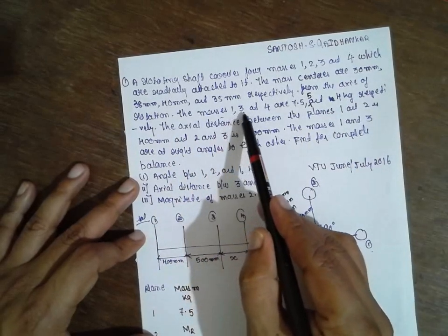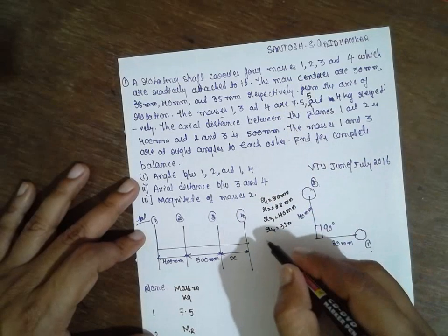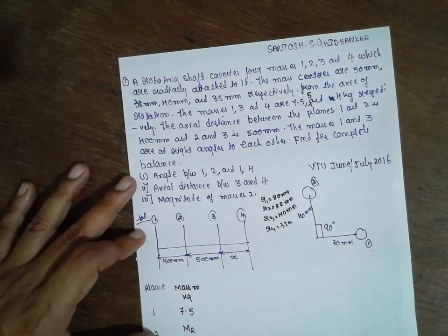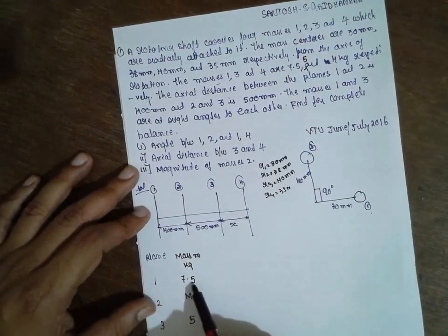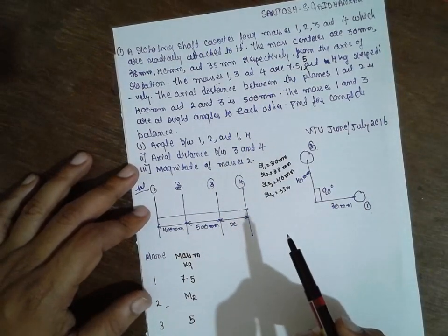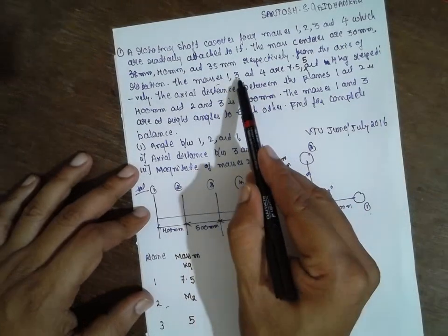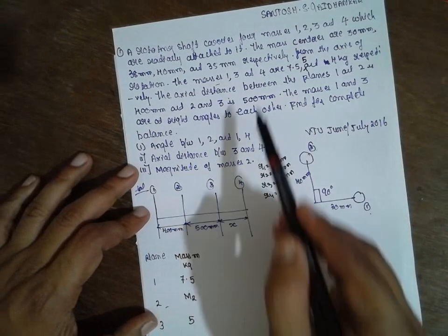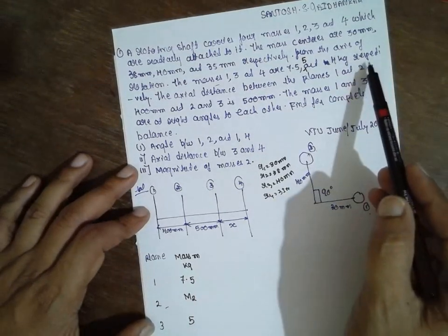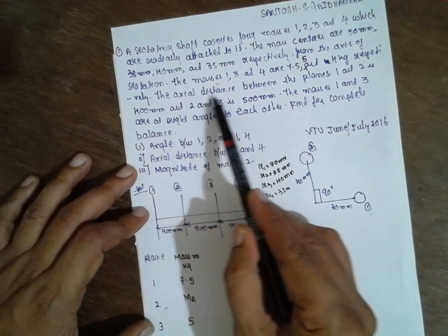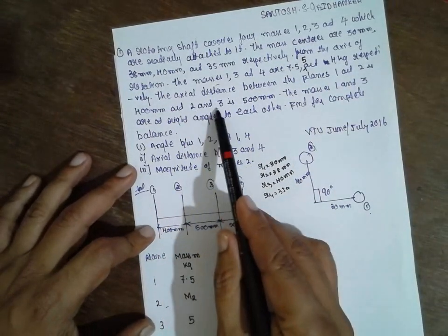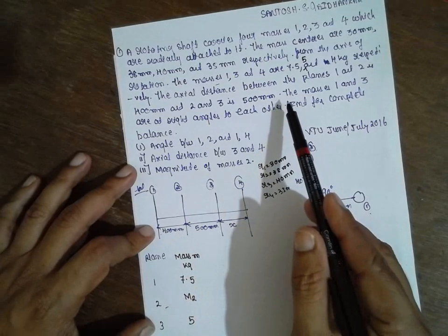The masses given are: mass one = 7.5 kg, mass two is unknown, mass three = 5 kg, and mass four = 4 kg. The axial distance between planes one and two is 400 mm, between two and three is 500 mm, and between three and four is X, which we have to find out.